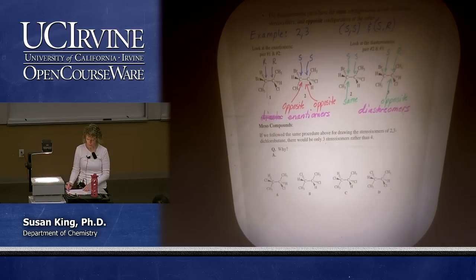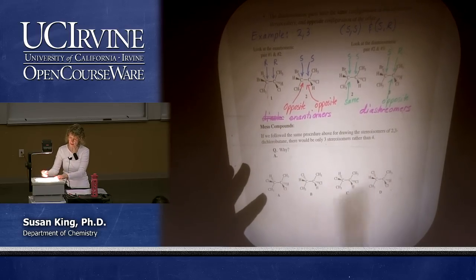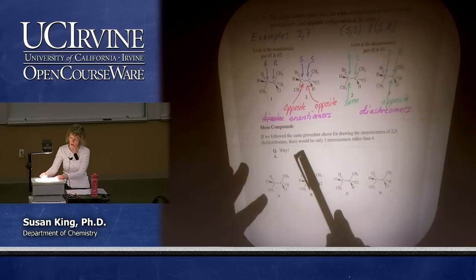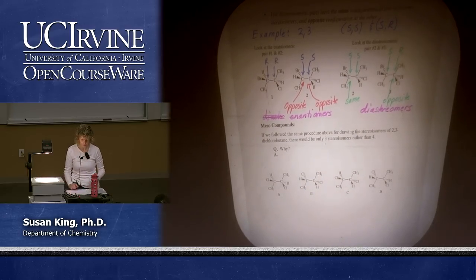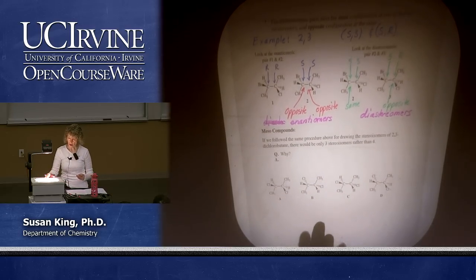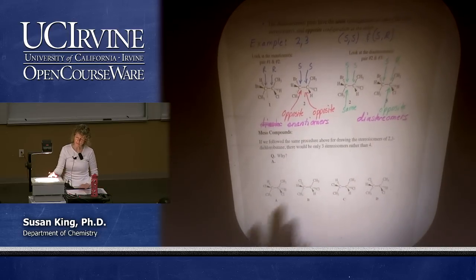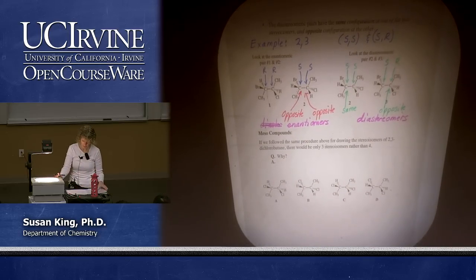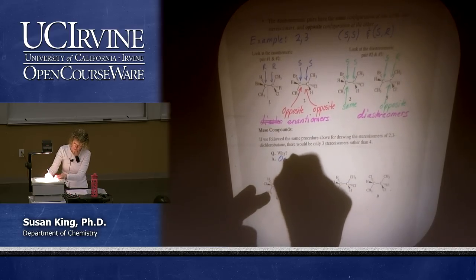We're ready to talk about meso compounds. If we follow the same procedure for drawing the stereoisomers of 2,3-dichlorobutane there would only be three stereoisomers rather than four. We said the maximum number of stereoisomers is four, but you can sometimes have less. The reason you have less is that one of the stereoisomers has a plane of symmetry.